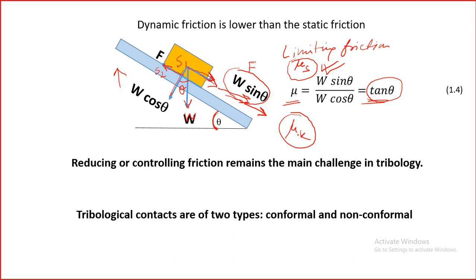So we can find out static friction using the inclined plane method, but we cannot find kinetic friction this way because there is no means to measure μk.